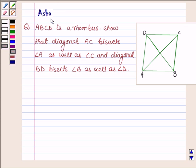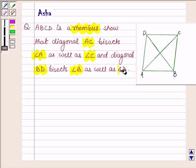Hello and welcome to the session. I am Asha and I am going to help you with the following question which says ABCD is a rhombus. Show that diagonal AC bisects angle A as well as C and diagonal BD bisects angle B as well as D.